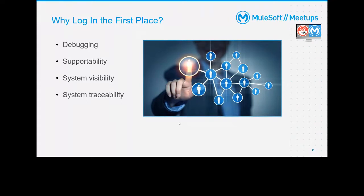Supportability also comes with debugging. If your application is already in production and after five months starts erroring out somewhere, you need logs to find it. When someone generates a ticket, the first thing you do after analyzing the ticket is look at the logs to see what happened, and then respond to that ticket.